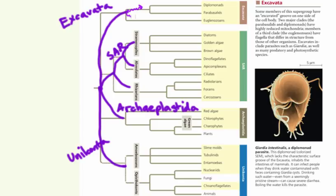The excavata limb of the eukarya has two sub-limbs we'll discuss. One of these branches is thematically adapted to anaerobic conditions, and consequently these cells have lost the typical mitochondria. For most cells, the mitochondrion serves as the site of aerobic respiration, and because these cells are now living under no-oxygen conditions there is no reason for such organisms to waste resources by continuing to make mitochondria.